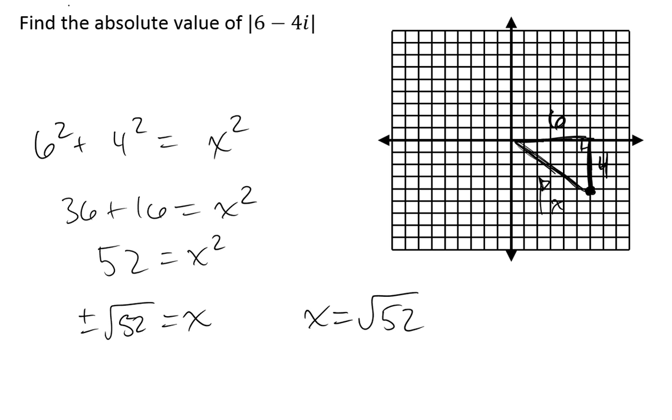I could simplify that a bit more. 52 is equal to 2 times 26, and 26 is 2 times 13. So it's 2, 2, 13. I can see I've got a perfect square of 4 hidden in the number 52. So x is 2 root 13.